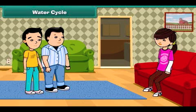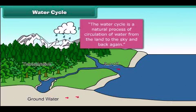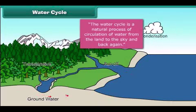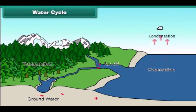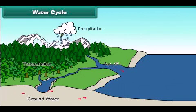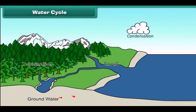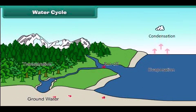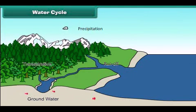Sister, yesterday you also told me about the water cycle. Please tell us more about it. Okay, the water cycle is a natural process of circulation of water from the land to the sky and back to the land. Water in water bodies like rivers, seas and oceans gets heated up by the sun and forms water vapours. This water vapour rises up in the air, gets cool, and turns into clouds and finally into rain. After raining, land water goes to lakes and rivers, which then flow back to the seas or oceans, and the cycle completes and gets repeated again and again.